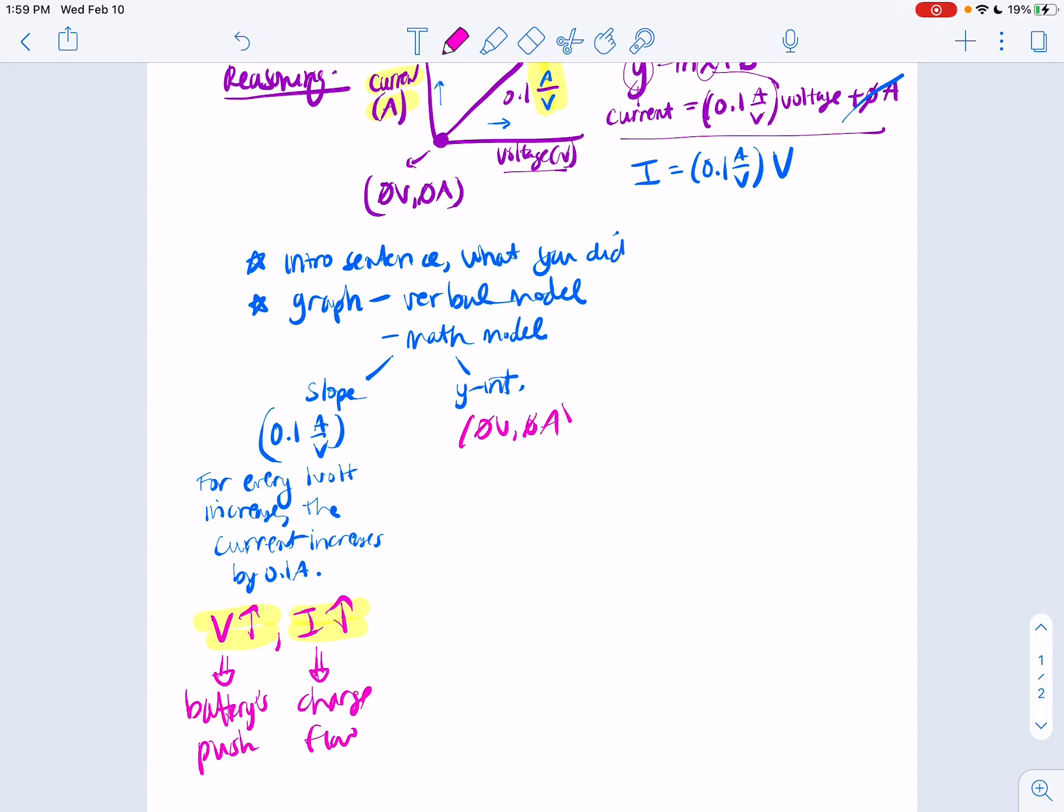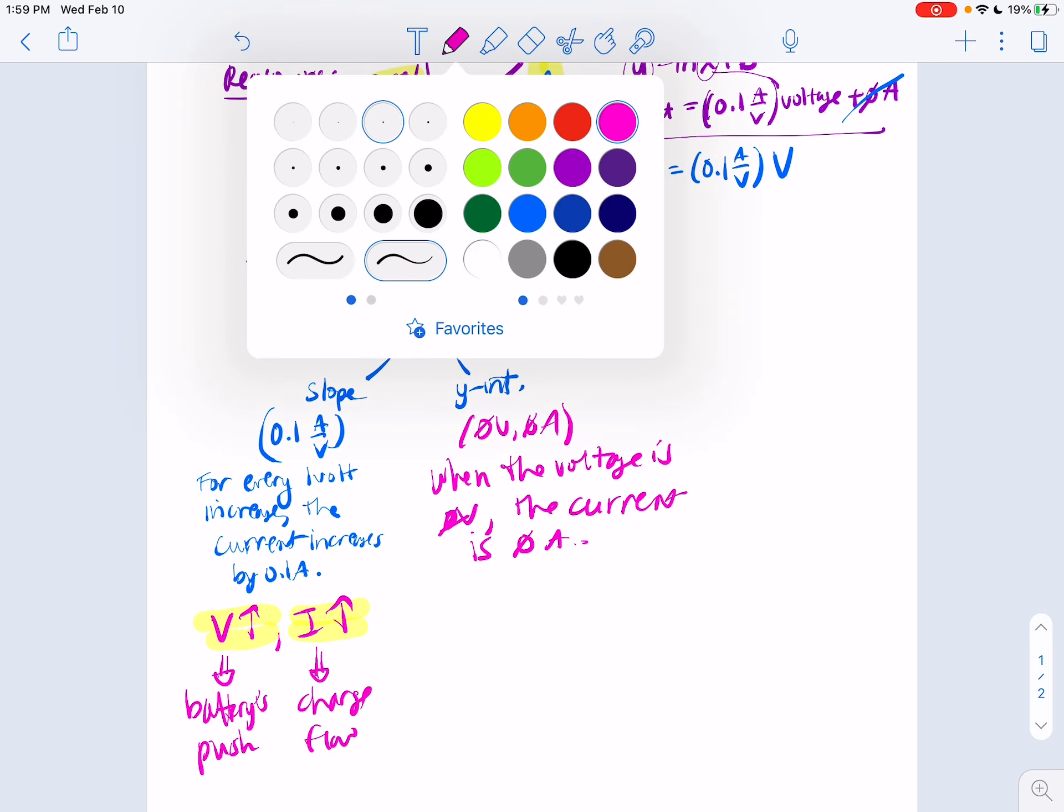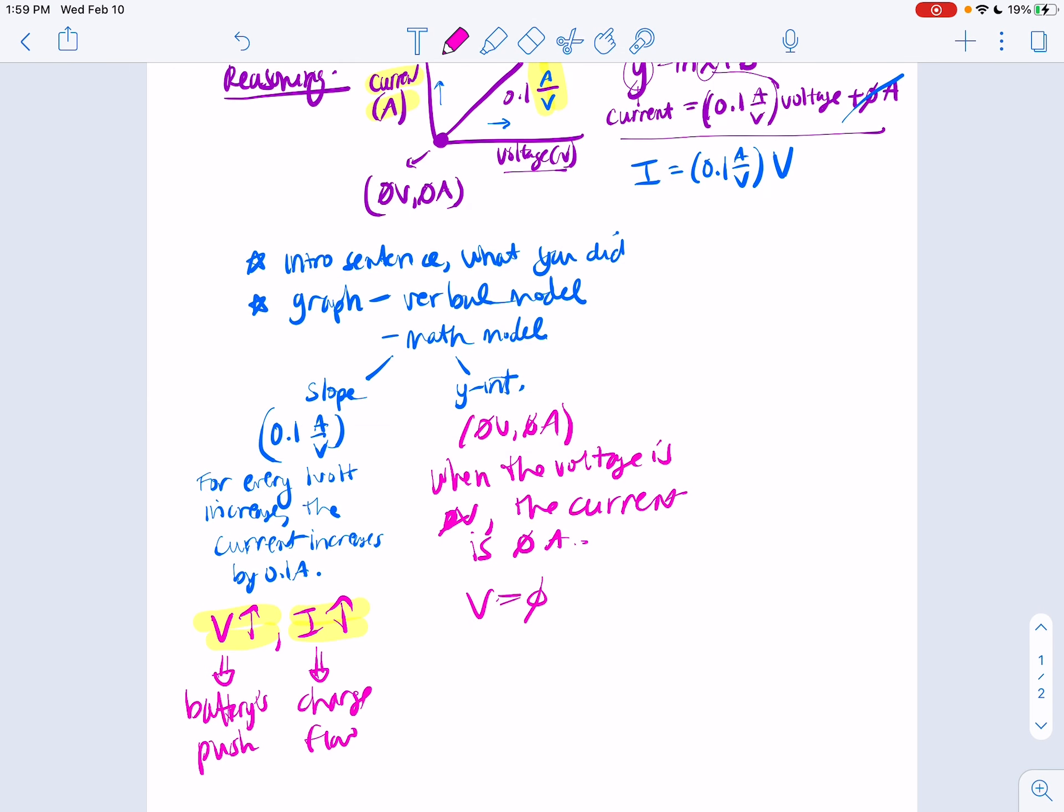All right, the y-intercept being 0 volt, 0 amps means when the voltage is 0 volts, the current is 0 amps. So let's think about what that means. When the voltage is 0, what is the battery doing? If the voltage is 0, that means the battery's not pushing. So when the battery is not pushing, the current is 0 amps, no charge flow, which makes sense. If the battery's not doing any pushing, then no charges can flow. So that's your explanation of your y-intercept.